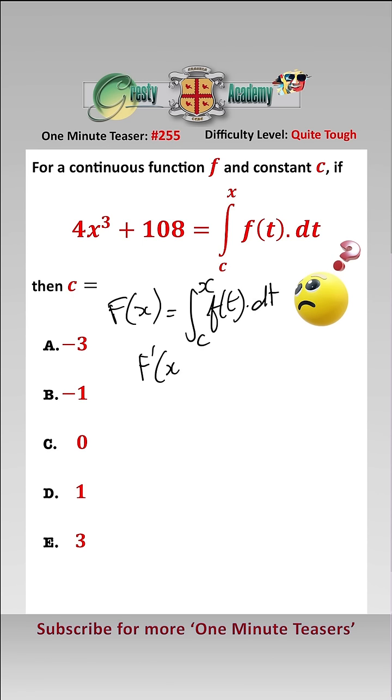then F dashed of x is equal to small f of x. So therefore we have here that this is f of x and all we need to do is differentiate that,